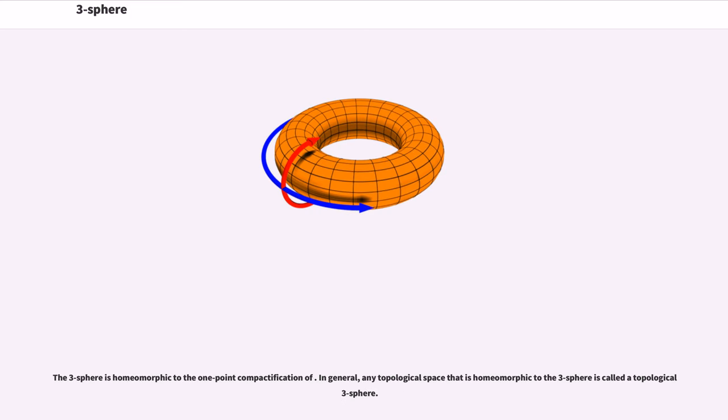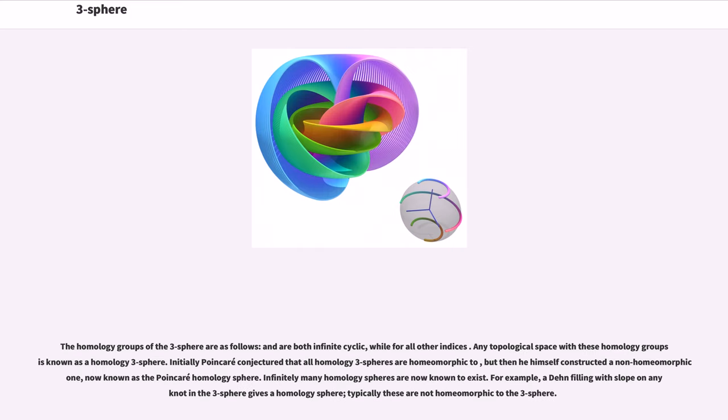The three-sphere is homeomorphic to the one-point compactification of. In general, any topological space that is homeomorphic to the three-sphere is called a topological three-sphere. The homology groups of the three-sphere are as follows: and are both infinite cyclic, while for all other indices,